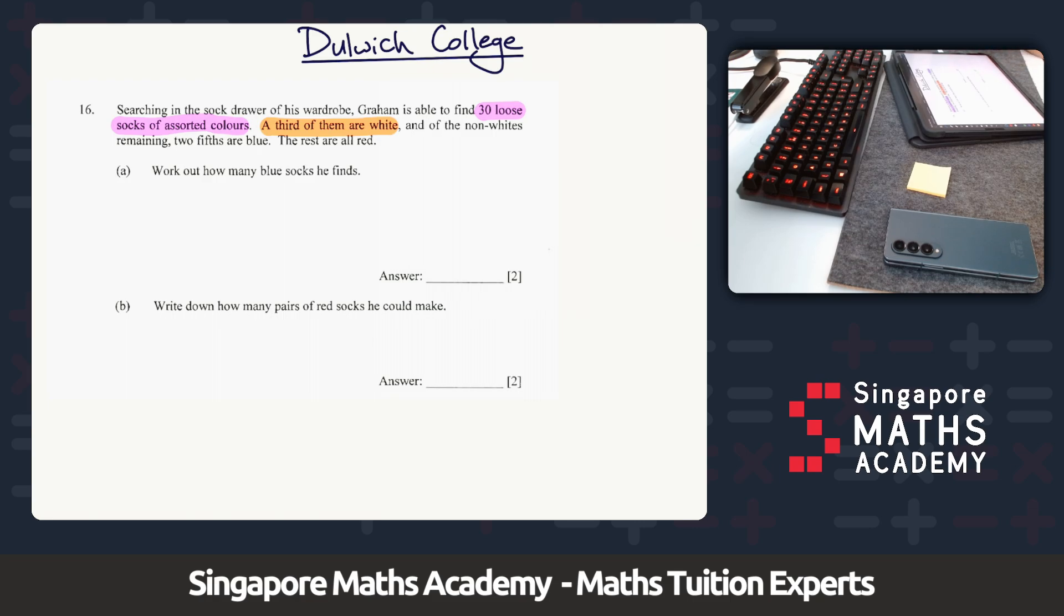This is one of those questions where we have remaining, and what I always suggest to our students is to use the bar model approach for these sort of questions. So we know that he's got 30. Let's draw a bar model for that. It's 30 socks.